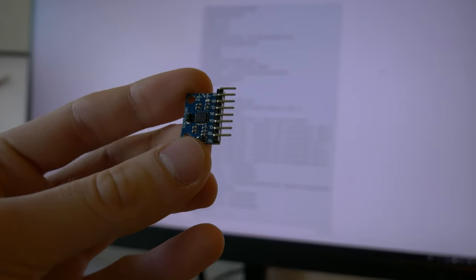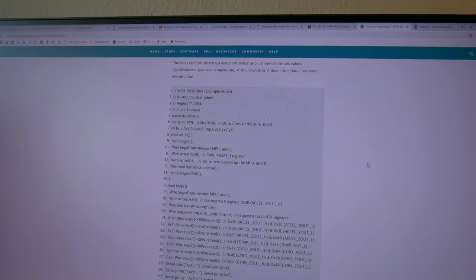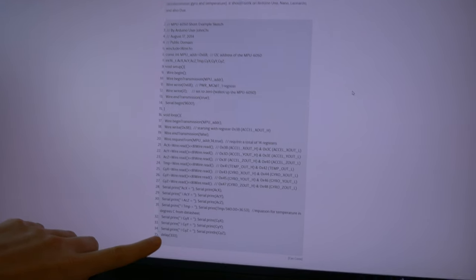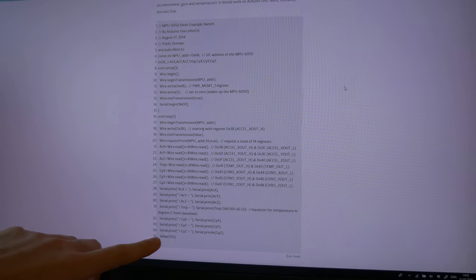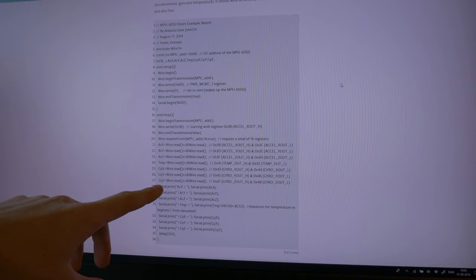If you are working with the MPU6050 yourself you have probably come across this page on the Arduino playground where you get this example sketch. They are reading the accelerometer, the temperature and the gyroscope data.